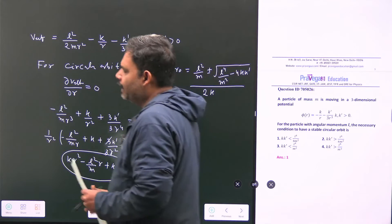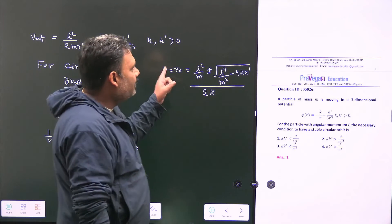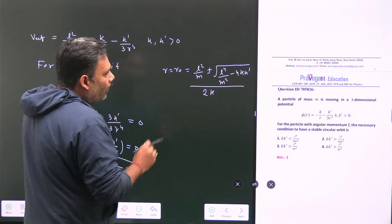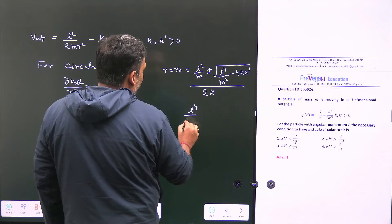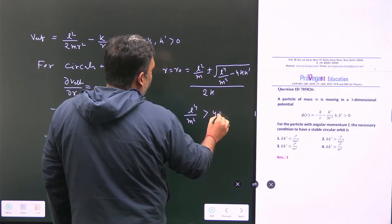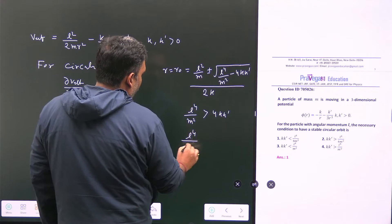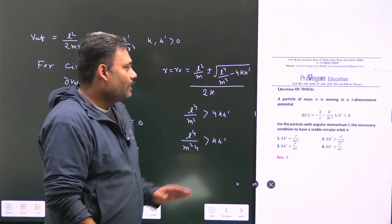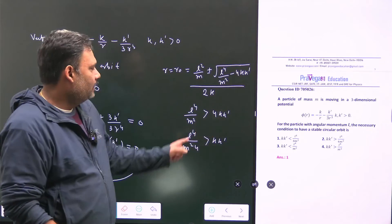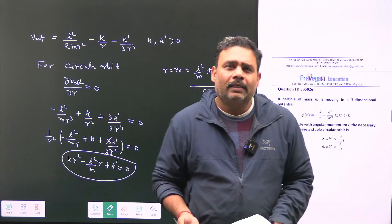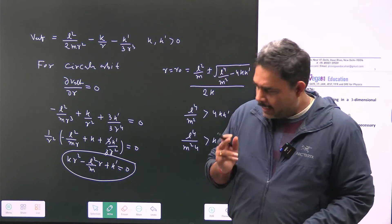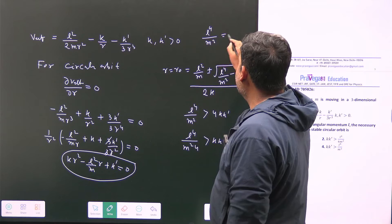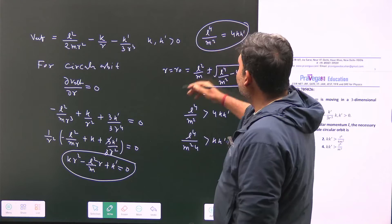We have to make sure that this radius r₀ is always a real quantity — it should not be negative or imaginary. From here we can have the condition: L⁴/m² must be greater than 4kk', which gives L⁴/(4m²) > kk'. So we can guess option A is correct — this is directly matching.